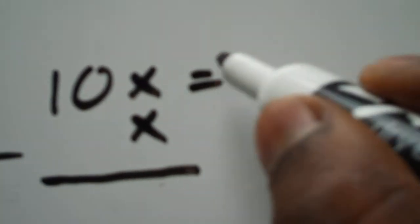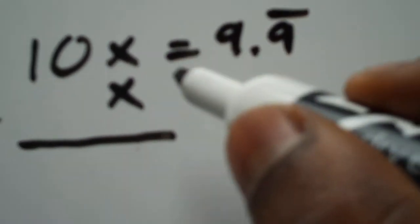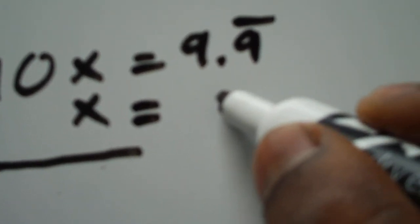Now before, we said that ten x is nine point nine repeating and we said x is point nine repeating.